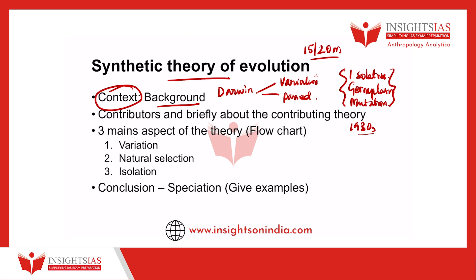During that phase, many scientists came together and came up with the idea of Synthetic Theory. It was, in a way, a synthesis between Mendel's genetics and Darwin's theory, which resulted in what we call today Neo-Darwinism or the Synthetic Theory of Evolution. That is the brief background of the Synthetic Theory of Evolution.